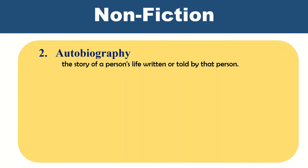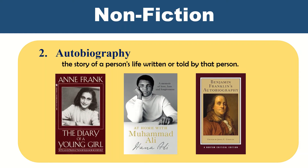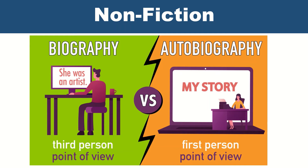Second is autobiography. As the name suggests, it is the story of a person's life written or told by that person. This picture visualizes the overall difference between biography and autobiography. As you can see, biography is a third person point of view, whereas autobiography is the first person's point of view.